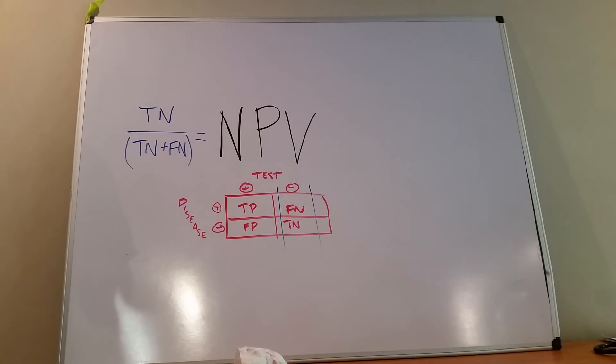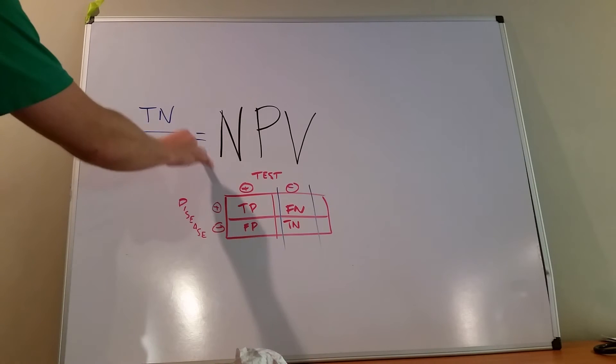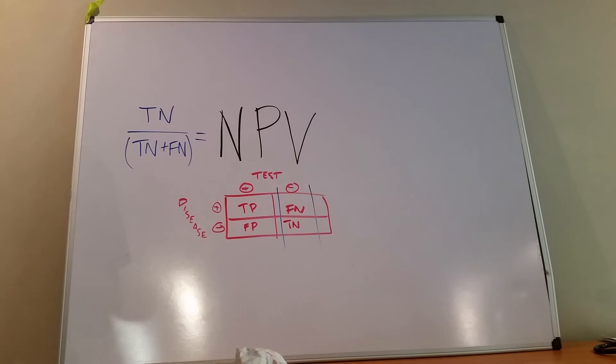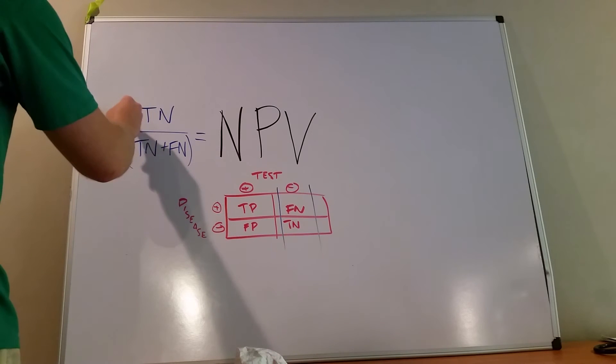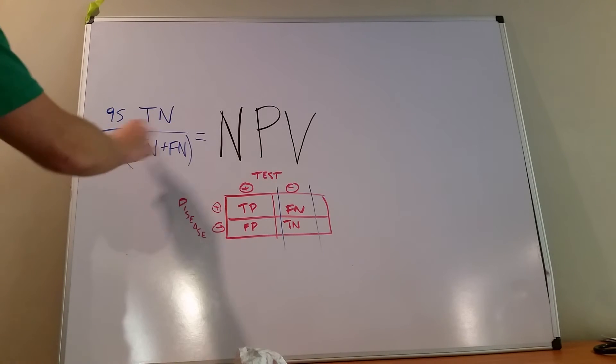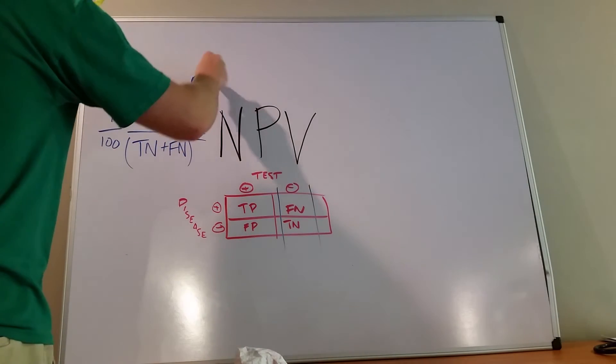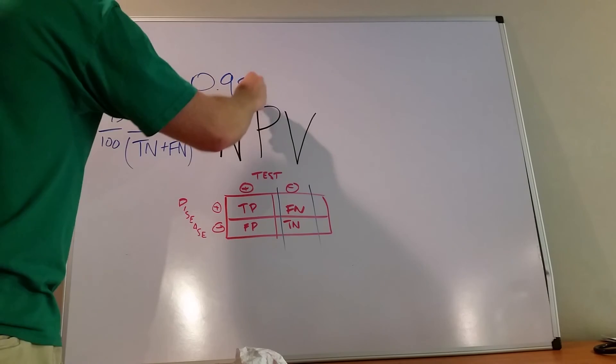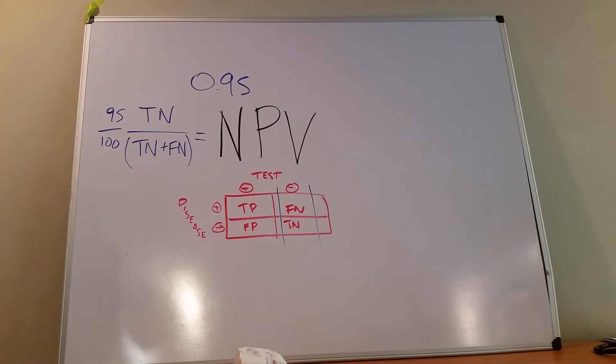So a negative predictive value is the true negatives over the total number of negatives, or TN plus FN. And this gives you a number. So let's say that this is 95 over 100. We had 100 negative results on our urine test for pregnancy and 95 of them were actually negative. But five of them were problems with the test. The test didn't pick up a pregnancy when it should have. It was a false negative. So this gives us a ratio of 0.95 for a negative predictive value.